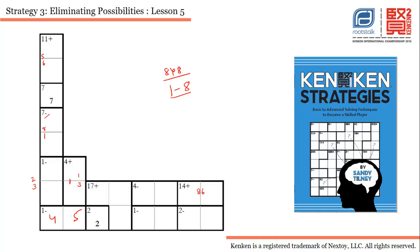Then we have 4 minus. What are the possible combinations? We can use 8 and 4, we can use 7 and 3, we can use 6 and 2, or 5 and 1. Now out of this we can delete this one because 8 is already there. We can delete this as well, so we are eliminating possibilities. We have 7 and 3, or 5 and 1.